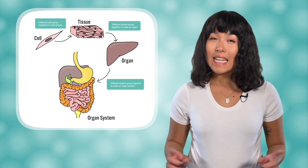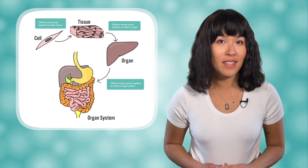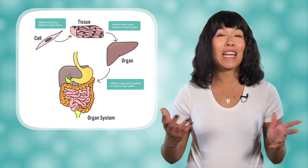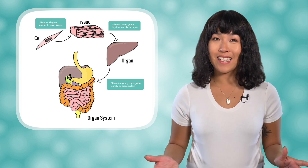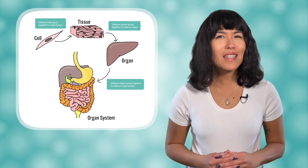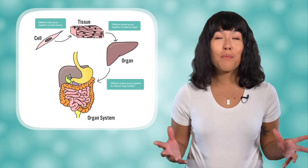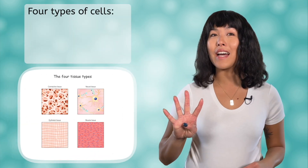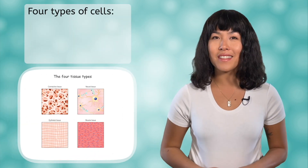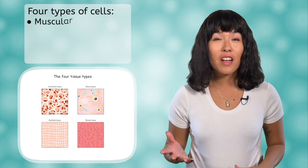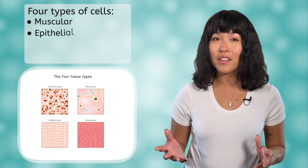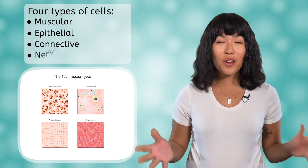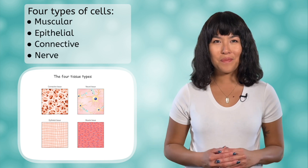Before we get into the body systems, starting in our next lesson, let's spend a little time talking about the human body at the cellular level. There are four main types of cells: muscular, epithelial, connective, and nerve cells.